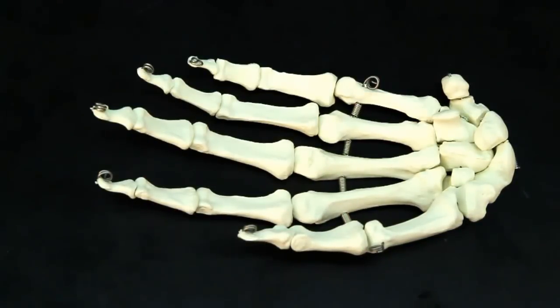What we're looking at now is an articulated hand. This particular hand happens to be a left hand. What we need to go through are the eight carpal bones of the wrist, as well as the various other bones throughout the hand.